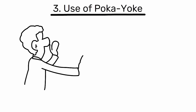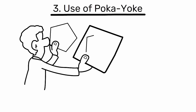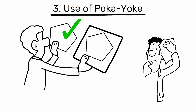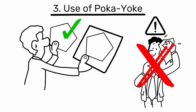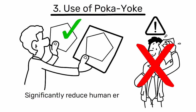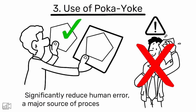3. Use of Poka-yoke: implement mistake-proofing devices or methods to prevent errors from occurring or to make them immediately noticeable. This can significantly reduce human error, a major source of process variation.